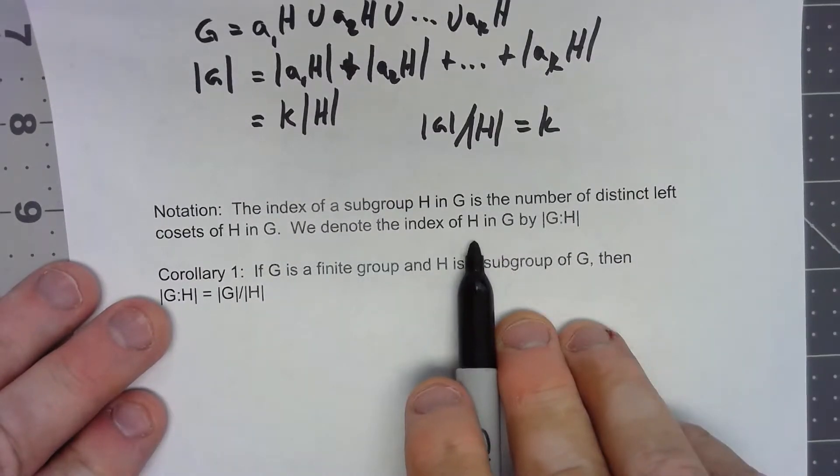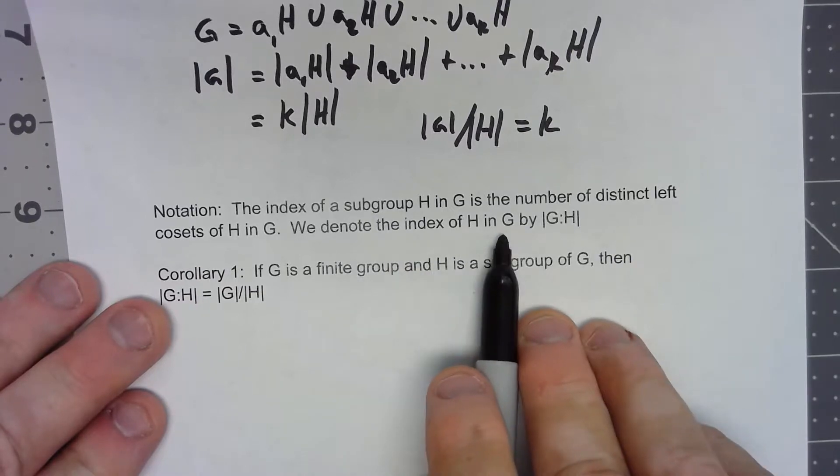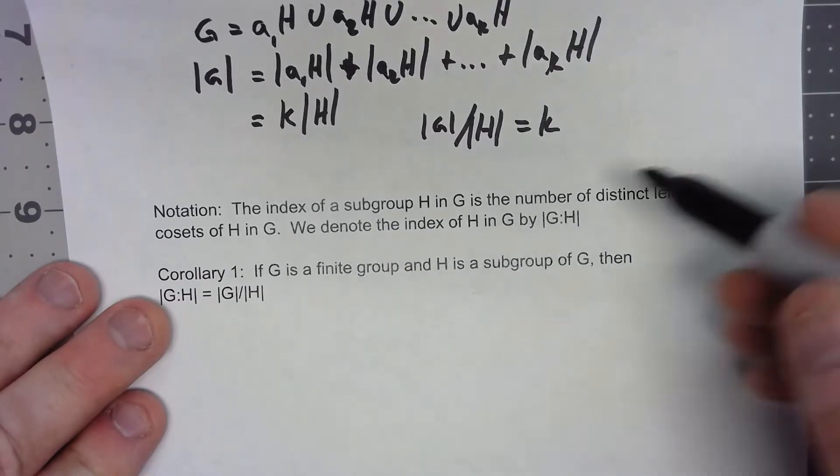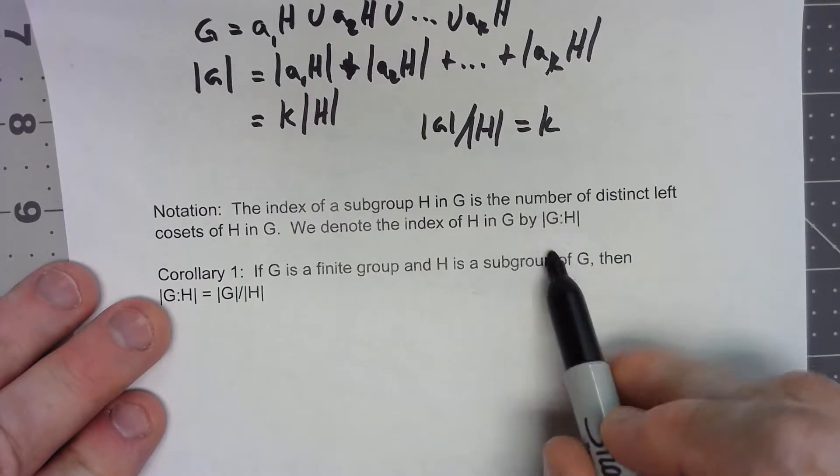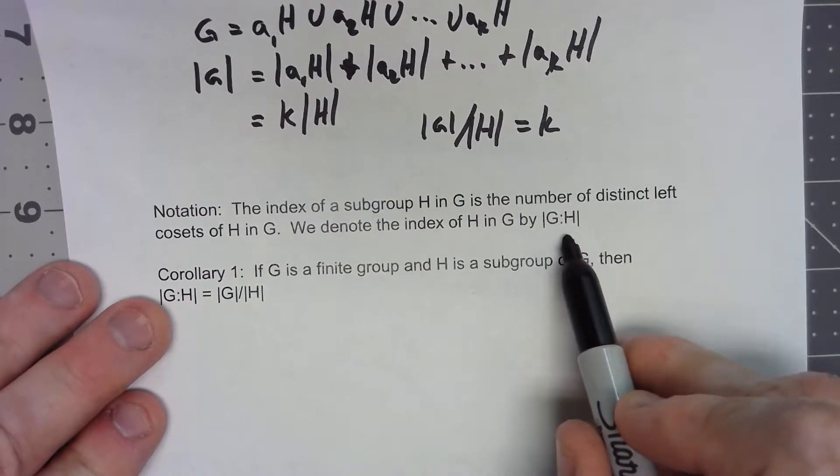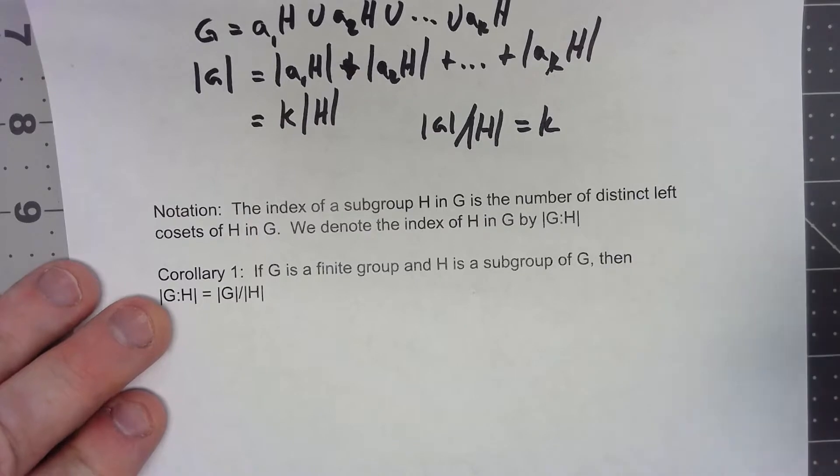We're just going to say that the index of H in G is the number of distinct cosets, and we're going to call that the magnitude of G colon H. Again, it's just the index of H in G is what we call that.